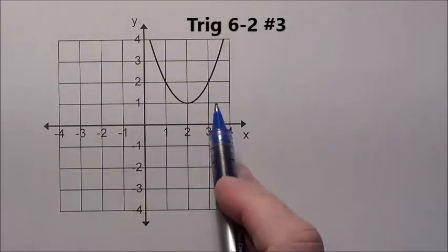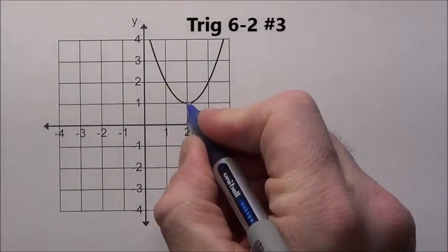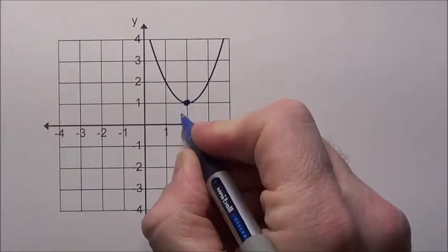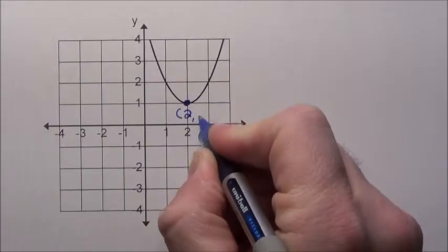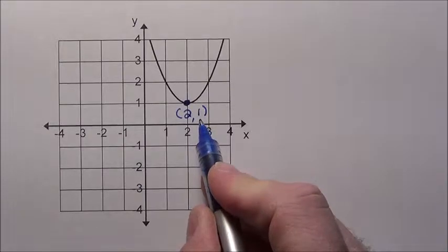All right, we want to know what is this the graph of? And the key is what's the vertex? We can see the vertex is right here at the ordered pair over 2, up 1. So the x value is 2 and the y value is 1.